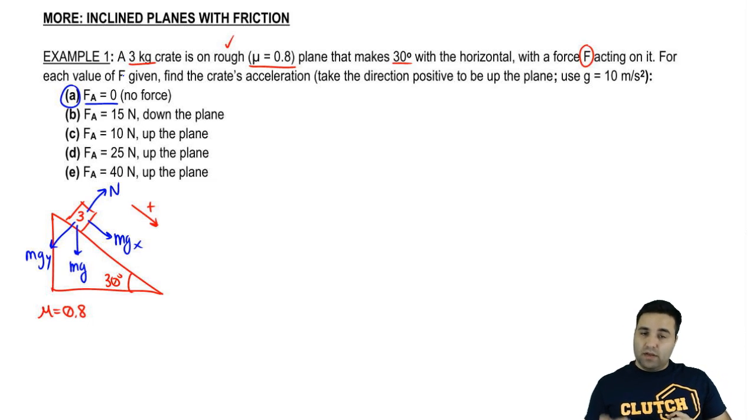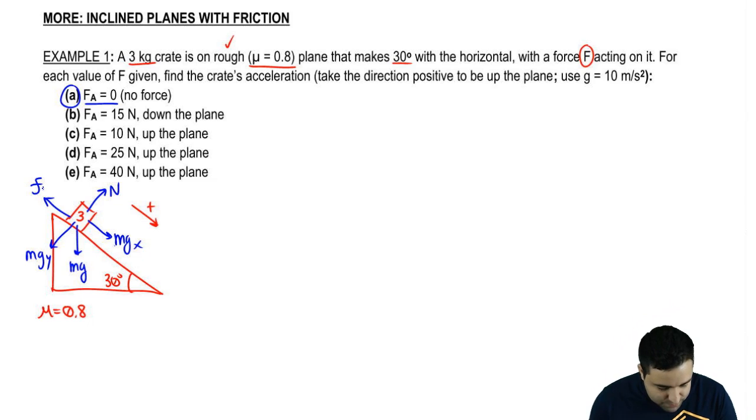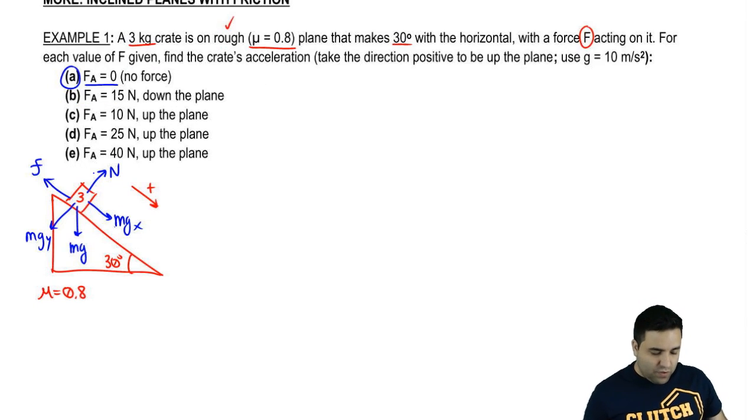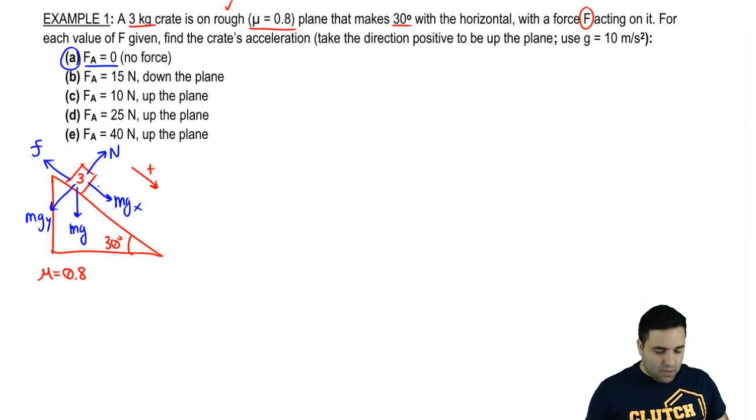So the only other force I'm missing here is friction. Without friction and without this external force, this block would slide down because mgx is the only force along the plane. If the block would slide down without friction, that means that we're going to have friction going up to try to stop the block. And actually, we don't know if that's static friction or kinetic friction yet. We don't know if the block moves or not, so let's check it out first. So this is the basic free body diagram for this first situation.